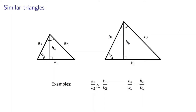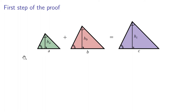Let's start by drawing three similar triangles with bases measuring A, B and C, and assume that the sum of the areas of the two smaller triangles is equal to the area of the larger one. Recalling that the area of a triangle is given by base times height divided by 2, we can write: A times HA over 2 plus B times HB over 2 equals C times HC over 2. Now comes the similarity property relating bases and heights: HA over A equals HC over C, and HB over B equals HC over C. In these equations, we'll isolate HA and HB.